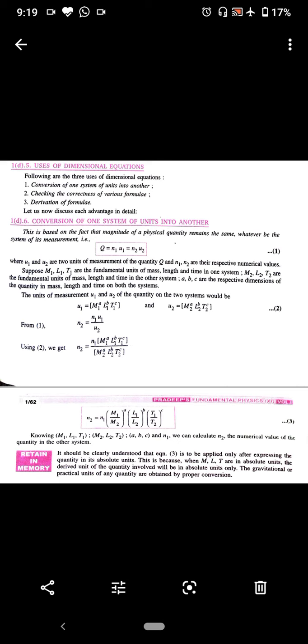So we have a quantity Q. Suppose in MKS system its value is N1U1, where N1 is the numerical value and U1 is the unit. And the value of this quantity Q in some another system of unit, say in CGS system of units its value is N2U2, where N2 is numerical value and U2 is the unit.